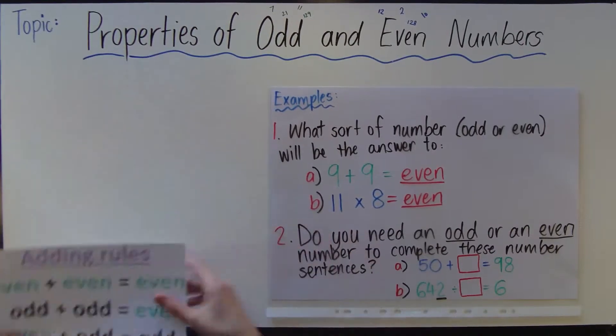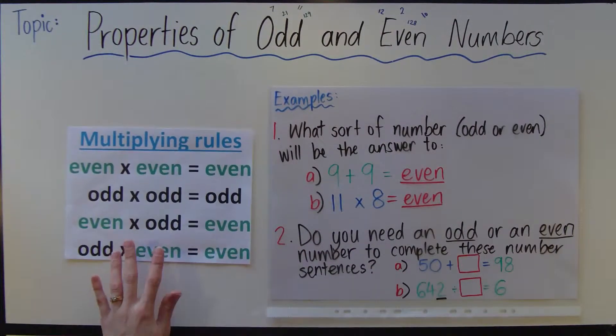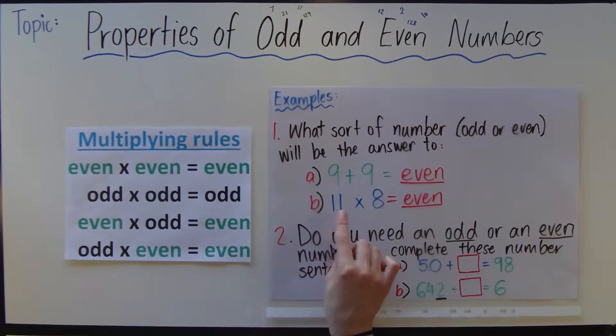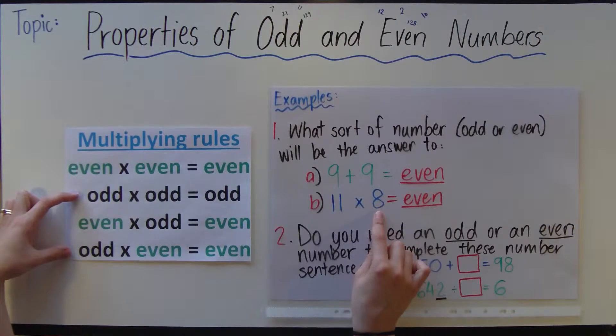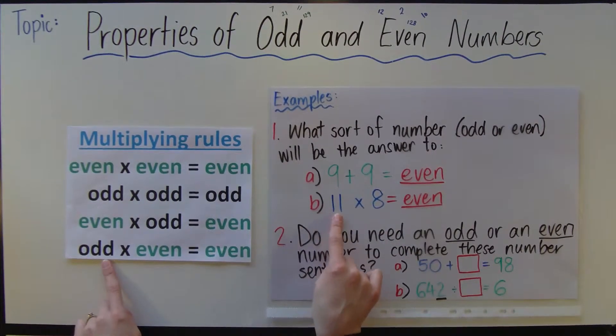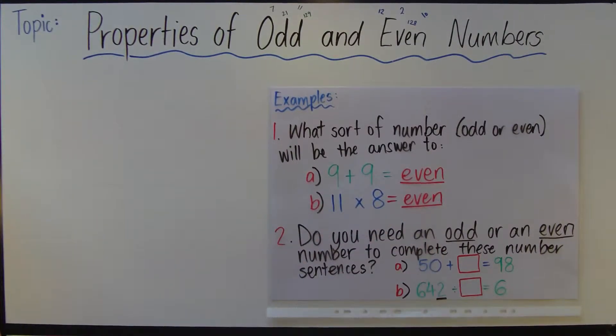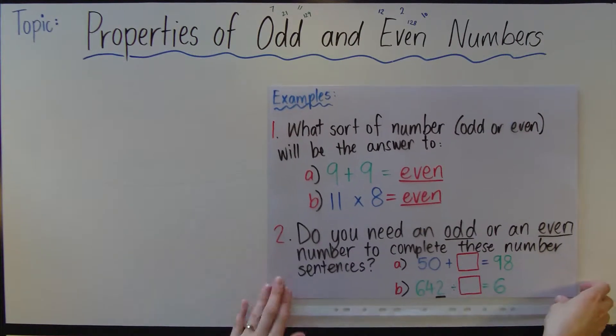Over here for 11 times 8, we simply go to the multiplying rules page, and that is 11, which is an odd number, times an even number. It's not that one, it's this one here: odd times even equals even. It's really quite fascinating with all these different rules for the adding, subtracting, multiplying, and dividing.